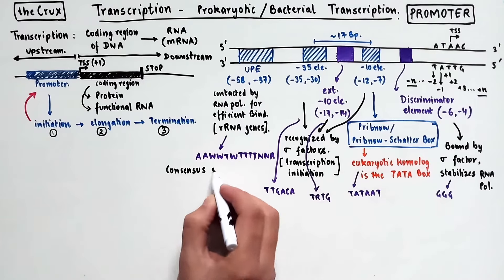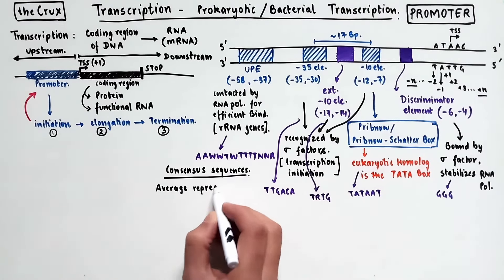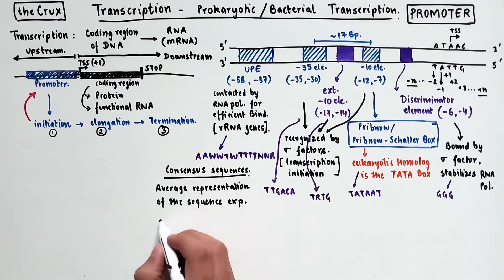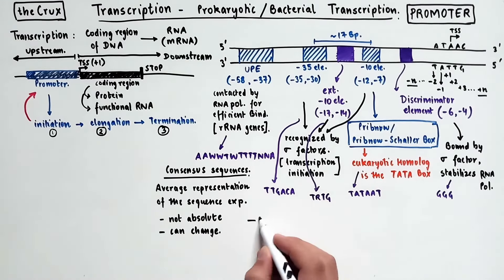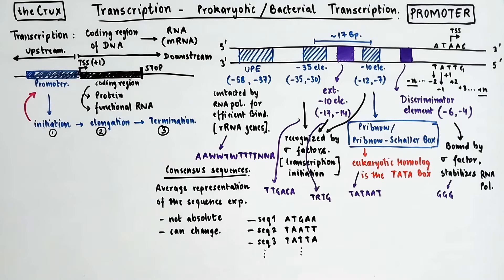So, you should keep in mind that the consensus sequence are just an average representation of the sequence expectation. This means that just because you have a consensus sequence does not mean that it is always like that in all genes. And therefore, it can change. A way to get consensus is to align a particular portion of DNA and compute the per base average in that alignment. And that gives you a consensus.